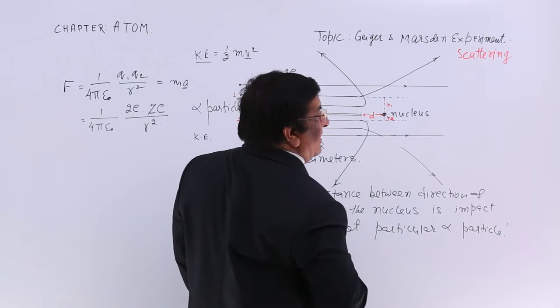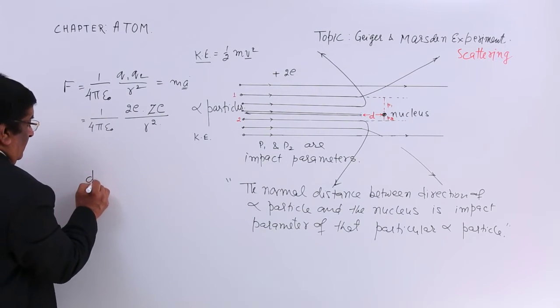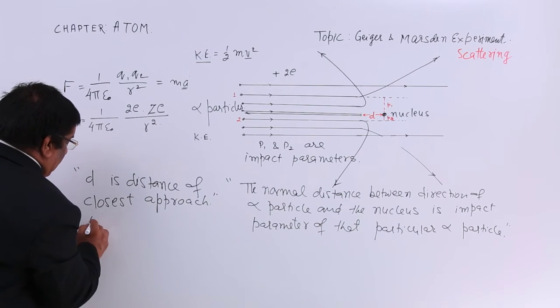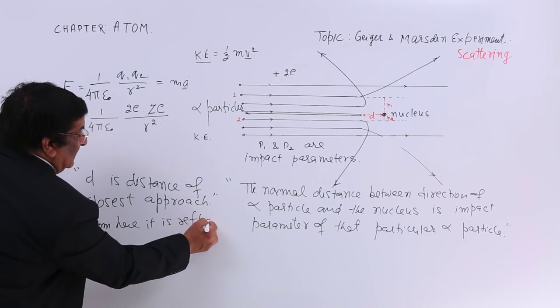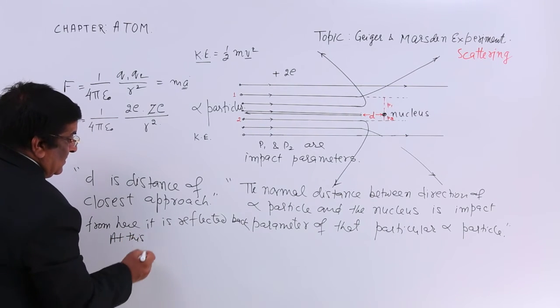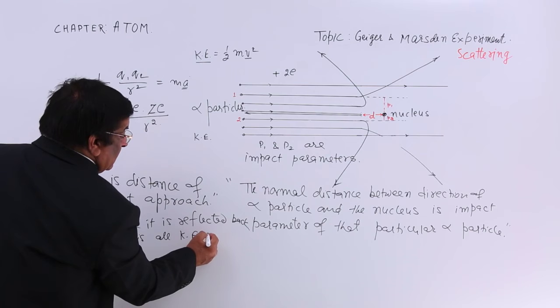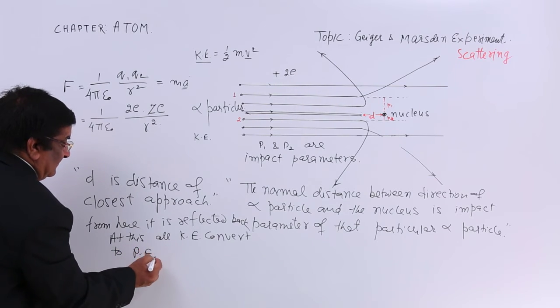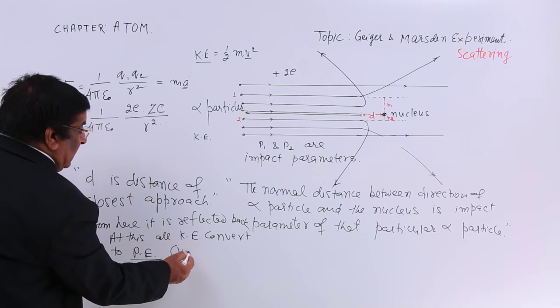So, this distance has been given the name minimum distance of approach or closest approach. This phenomena is closest approach and this is the distance of closest approach. D is distance of closest approach, from here it is reflected back. At this point, all kinetic energy convert to potential energy. Yes. All kinetic energy used because V has become 0.